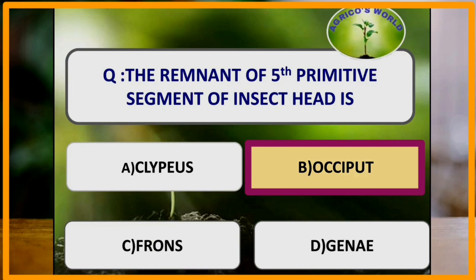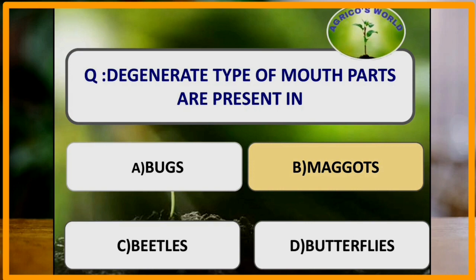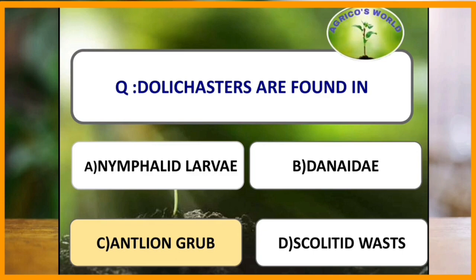Degenerate type of mouthparts are present in which of the following? Degenerate type of mouthparts are seen in maggots. Dolicasters are found in antlion grubs.